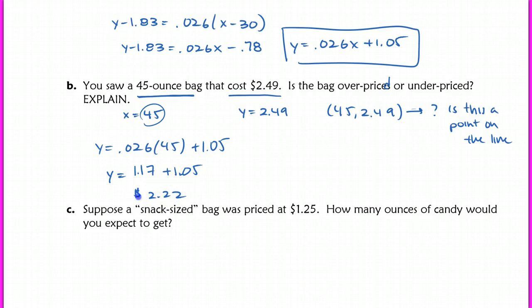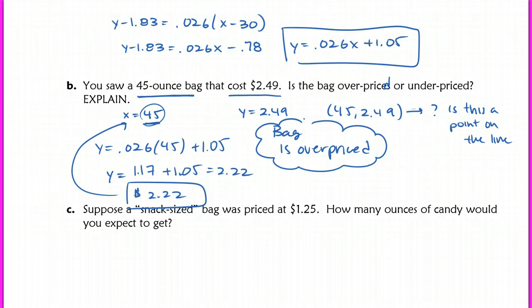So $1.17 plus $1.05, which is going to be $2.22. Okay, so let's take a look at this price here. If we end up with $2.22 by paying 45, sorry, you buy 45 ounces worth of candy, you're supposed to only pay $2.22. So this bag at $2.49 is overpriced. Okay, so the bag is overpriced, and you can show, you can give an explanation here because the bag should only cost $2.22. So this would be an explanation that I would want to look for, and then you would have work supporting it.